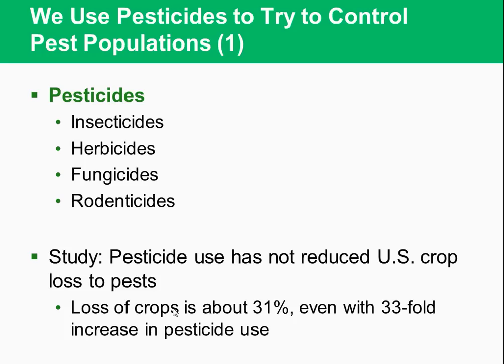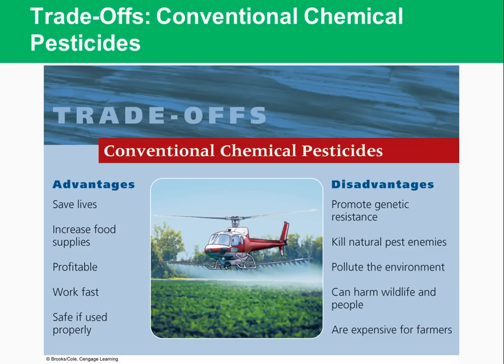There's also the pesticide treadmill, where pests develop resistance to pesticides and scientists must continually develop new ones. Trade-offs of conventional pesticides: advantages include saving lives by reducing disease vectors like mosquitoes that transmit malaria, increasing food supplies, being profitable, working fast, and being safe if used properly. Disadvantages include promoting genetic resistance, killing natural pest enemies like the wolf spider, polluting the environment and waterways, harming wildlife and people, and being expensive for farmers to apply.